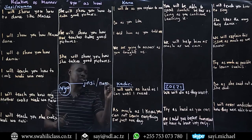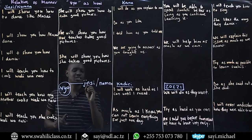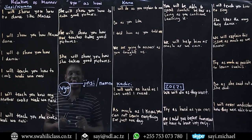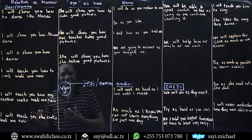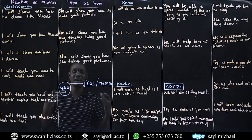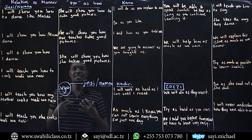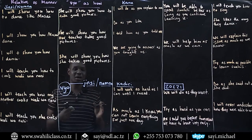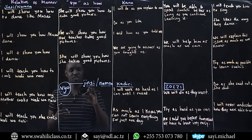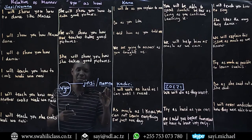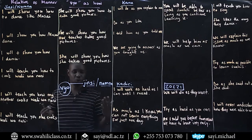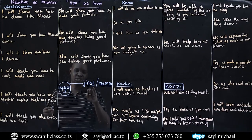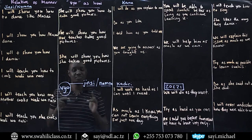Do you know the meaning of jinsi o namna? Jinsi is how, the way — the same as namna. The way or how is jinsi o namna. So if you use jinsi or namna, it's the same thing. Every time you want to say how, you can say jinsi or namna — no problem at all. They're all the same.